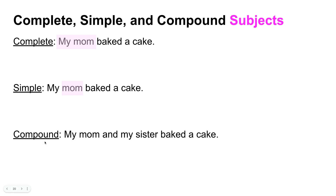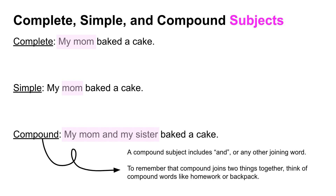A compound subject is when you have two or more things or people you're writing about in a sentence. In 'My mom and my sister baked a cake,' the compound subject is 'my mom and my sister.' The compound subject includes 'and' or any other joining word. Think of compound words like 'homework' or 'backpack' — a compound subject joins two or more things together that the sentence is about.